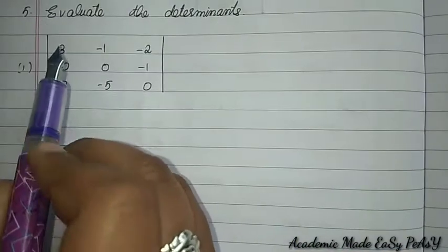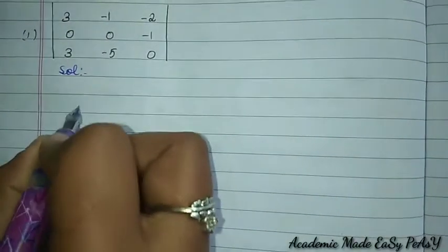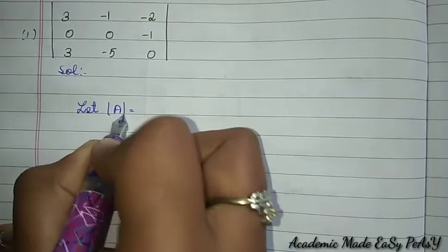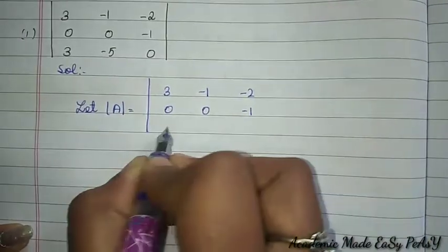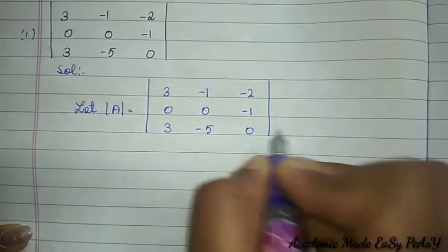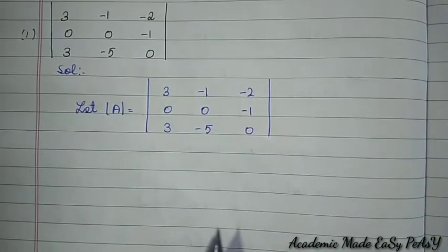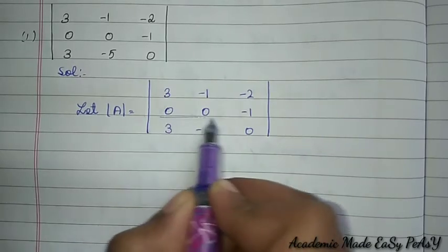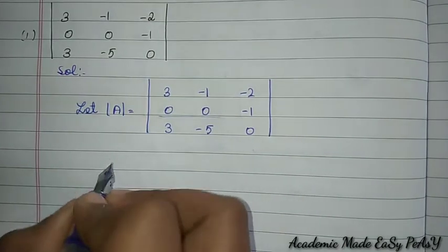Question 5: evaluate four 3×3 determinants. Subdivision 1: let det(A) = [3,−1,−2; 0,0,−1; 3,−5,0]. Checking for zeros, Row 2 has the most zeros, so I will expand through Row 2.